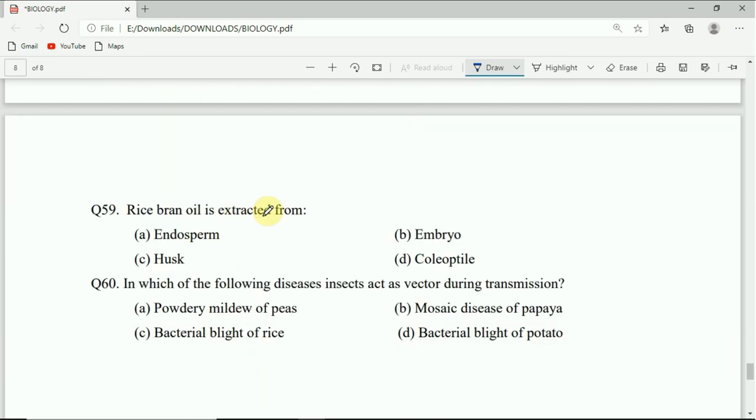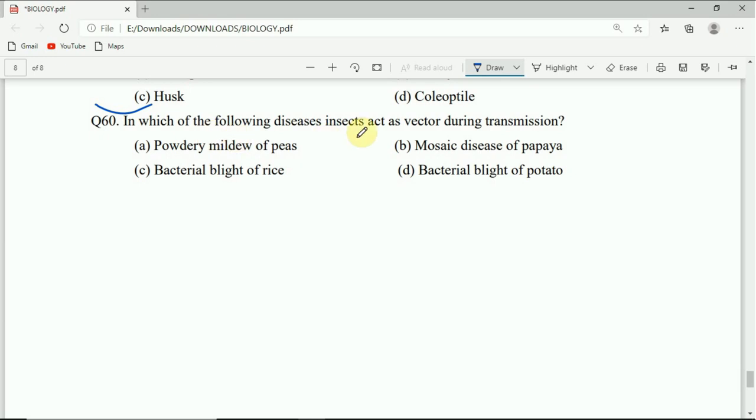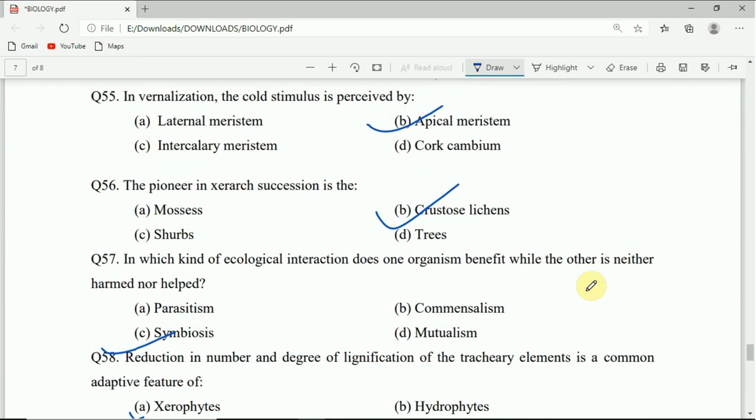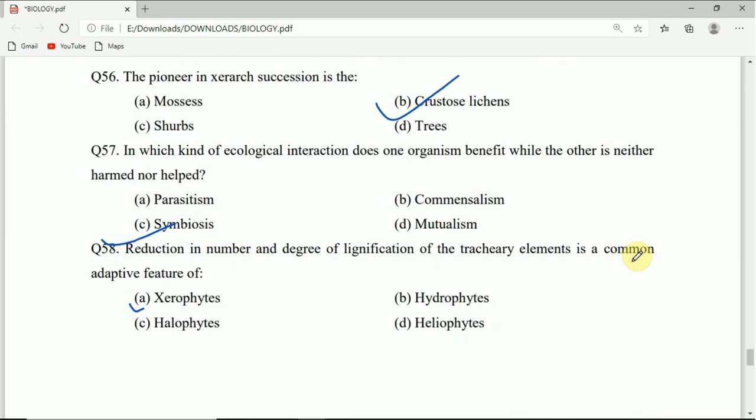Question 59: Rice bran oil is extracted from endosperm, embryo, husk, or coleoptile. Right answer will be C, husk. Question 60: In which of the following diseases do insects act as vectors during transmission - powdery mildew of peas, mosaic disease of papaya, bacterial blight of rice, or bacterial blight of potato. You have to choose the correct answer and mention it in my comment box. Hope you like this video. Don't forget to like, comment, share, subscribe. Thank you for watching. Jai Jagannath.